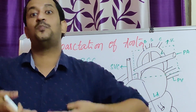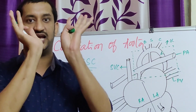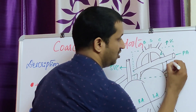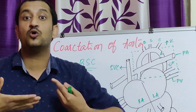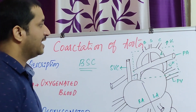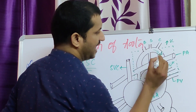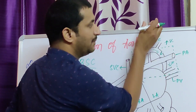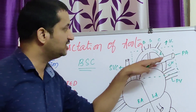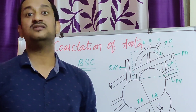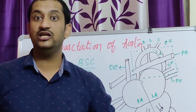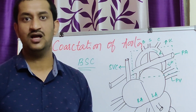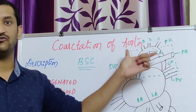This means the localized aortic narrowing creates a lot of blood pressure. Whereas to the lower part of the body, the pressure will be very less and decreased. Once the blood comes from here, it will meet the narrowing. So if there is narrowing here, the blood flow will increase to the upper side of the body or upper extremity, and blood flow is very less to the lower part of the body. So this is about the coarctation of aorta.